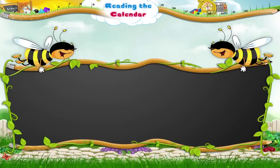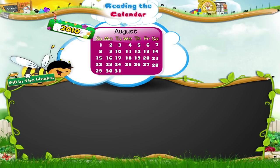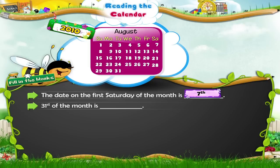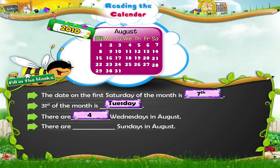Now that you have understood the calendar, let us revise what we have learnt. Looking at the calendar, answer these questions. Let's begin. The date on the 1st Saturday of the month is — the 1st Saturday of the month is the 7th. The 31st of the month is — the 31st of the month is a Tuesday. There are how many Wednesdays in August? There are 4 Wednesdays in August. There are 5 Sundays in August.